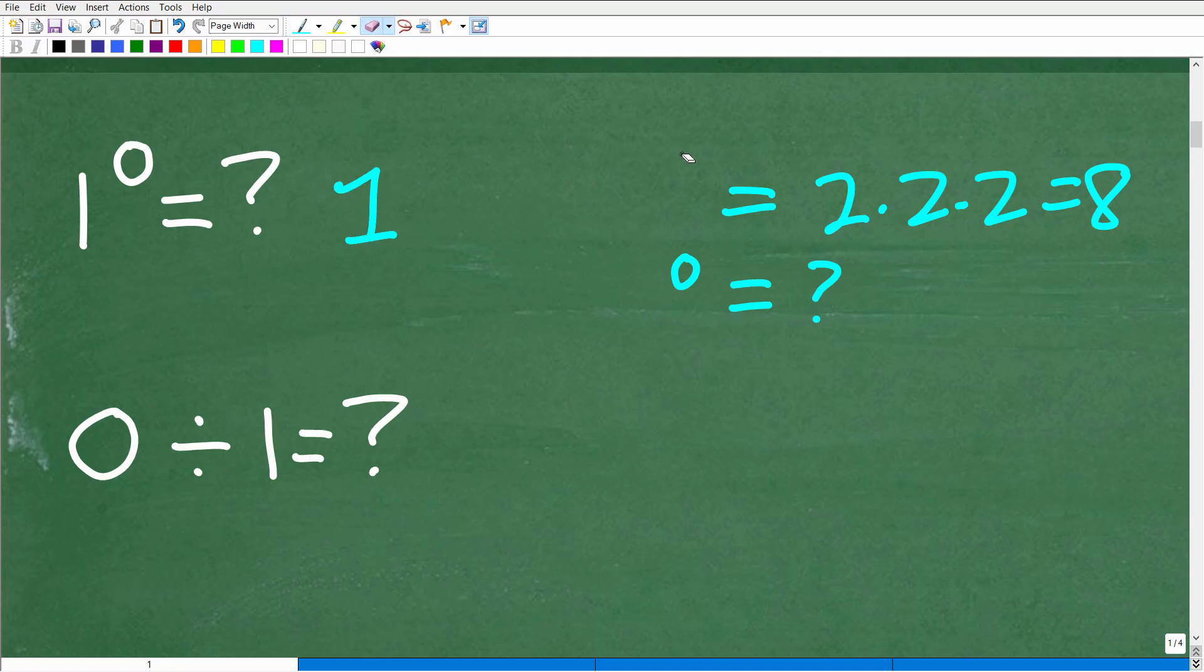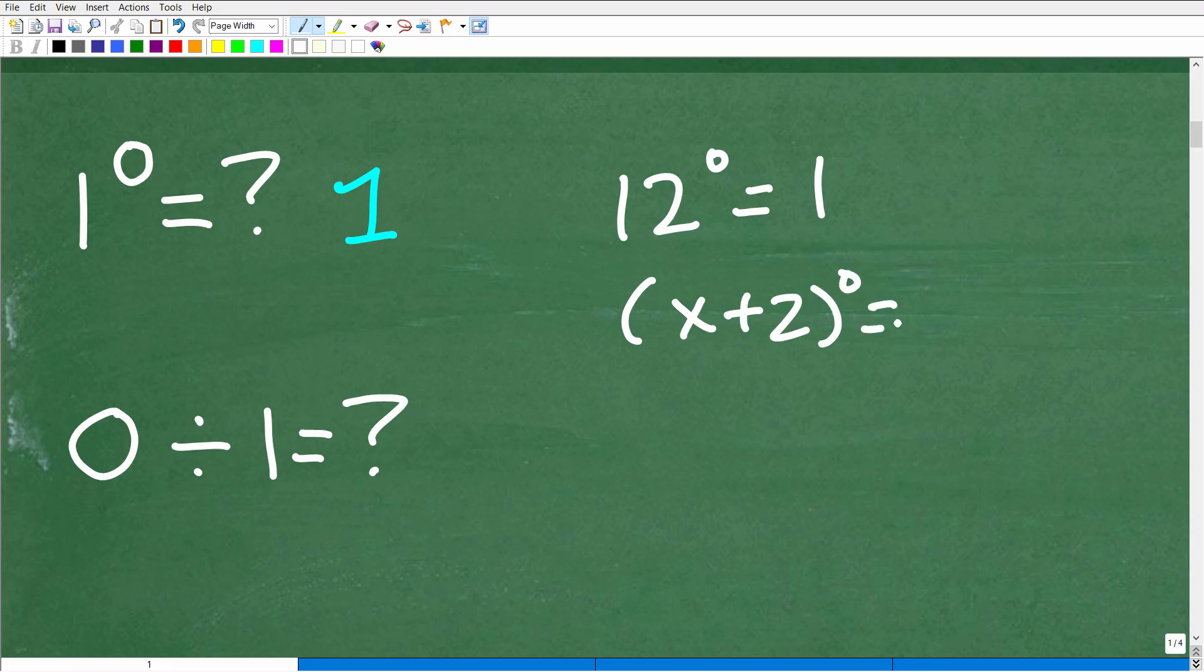The question is kind of weird, but the answer is always one, okay? Anything to the zero power, any value, any expression to the zero power is one. So, for example, 12 to the zero power is one.